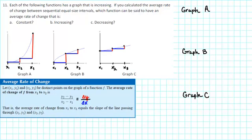Each of the following functions has a graph that is increasing. If you calculated the average rate of change between sequential equal-sized intervals, which function can be said to have an average rate of change that is: a) constant, b) increasing, c) decreasing?